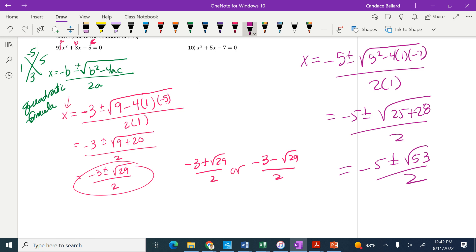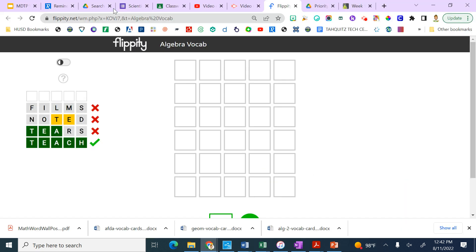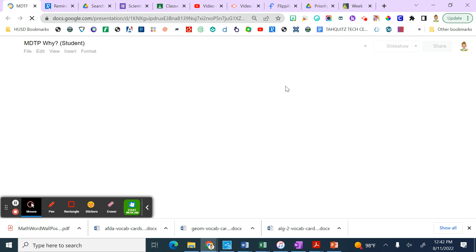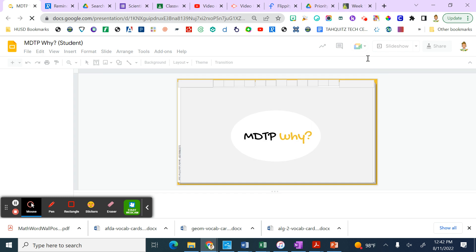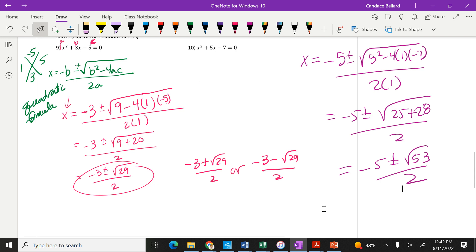I'll give you like 30 seconds because I forgot I wanted to talk about something real quick. Okay, that's the answer I got. Negative 5 plus or minus square root of 53 over 2.